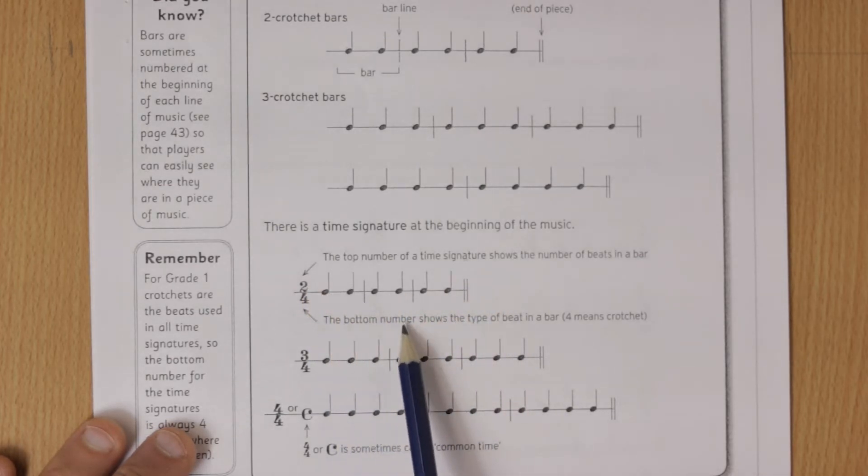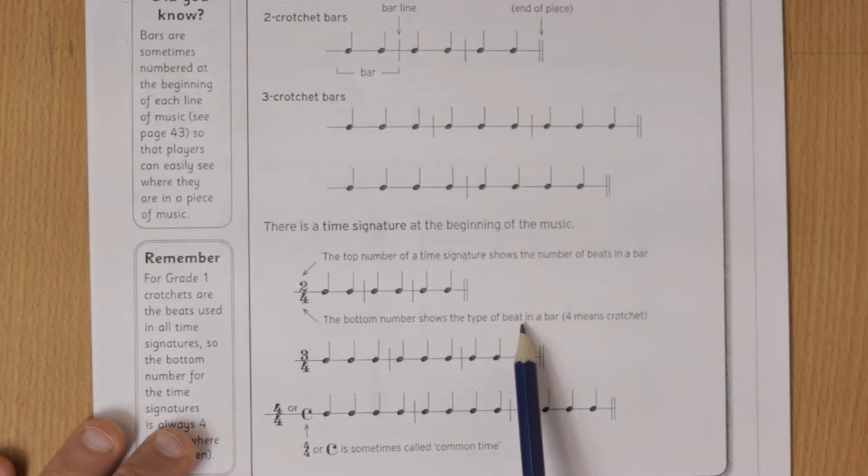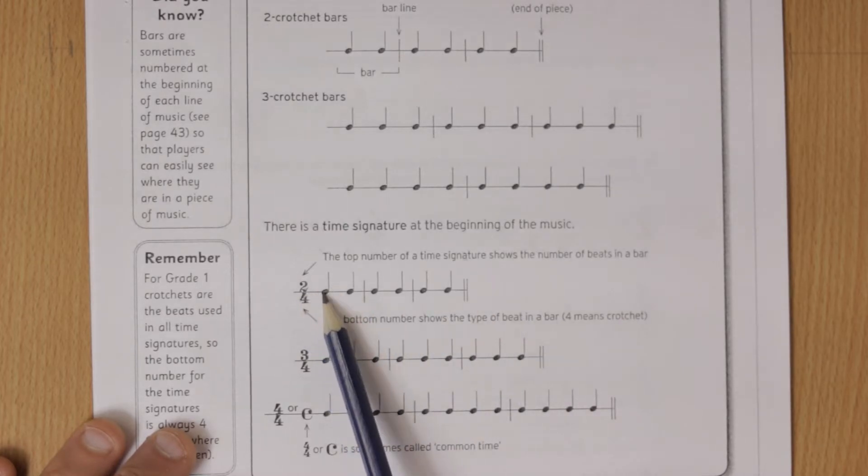The bottom number shows the type of beat in a bar. We won't get into why, but you just need to know that a four means crotchets. So this means that there will be two crotchet beats in each bar.